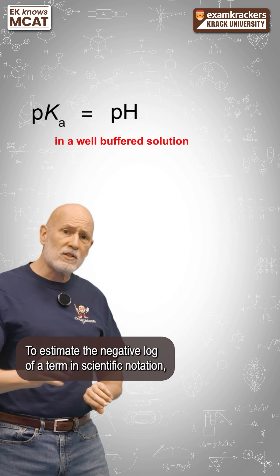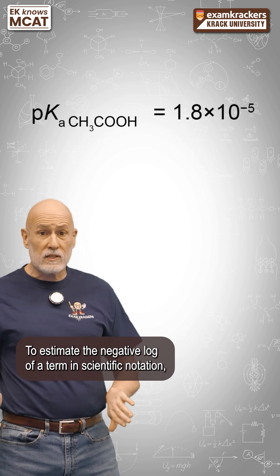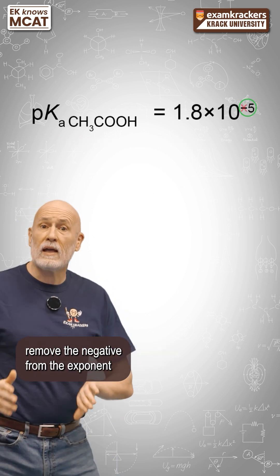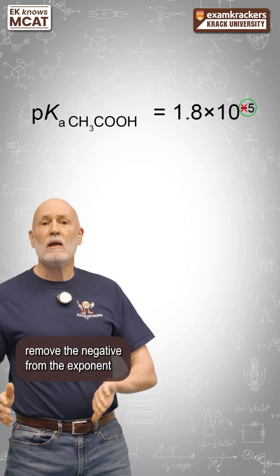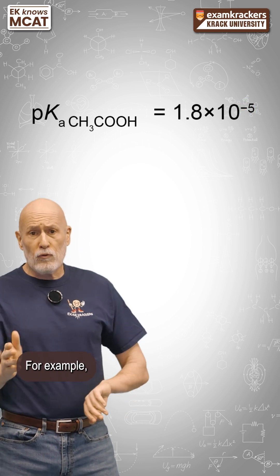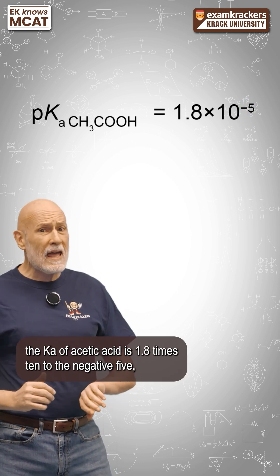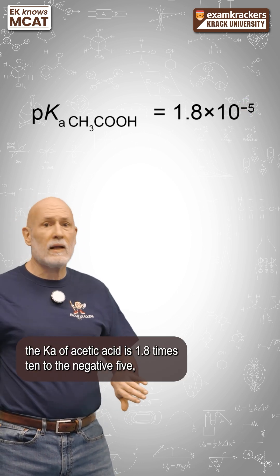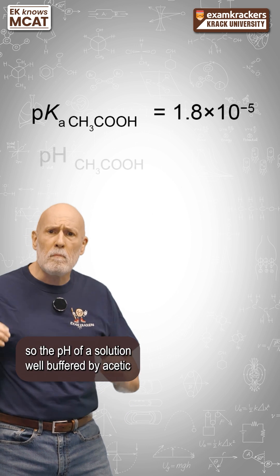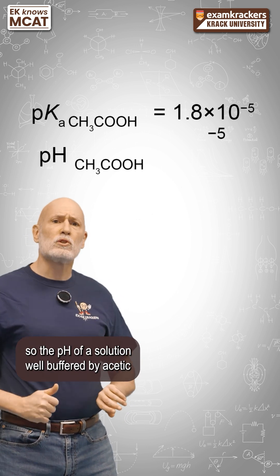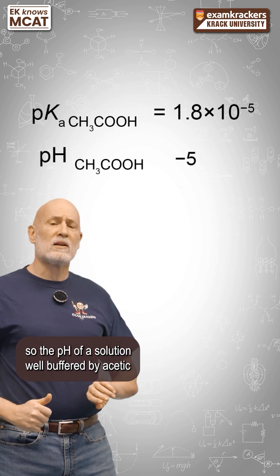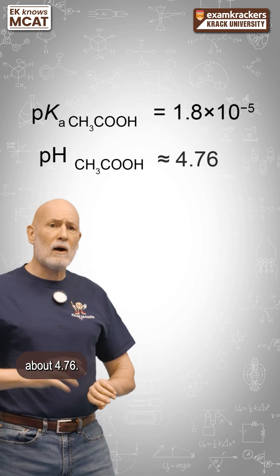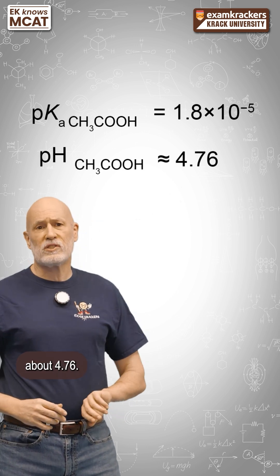To estimate the negative log of a term in scientific notation, remove the negative from the exponent and make it a little smaller. For example, the Ka of acetic acid is 1.8 times 10 to the negative 5. So the pH of a solution well buffered by acetic acid is a bit lower than 5, about 4.76.